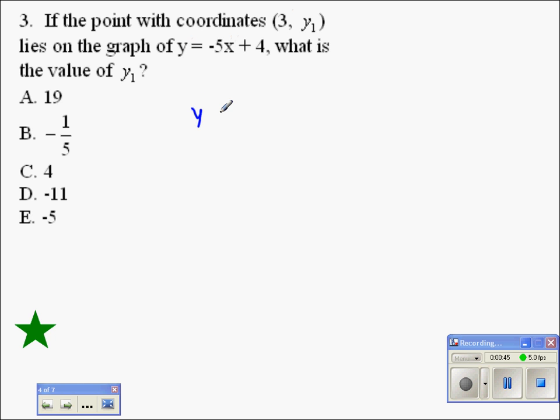Let's plug it in. y equals negative 5 times x, which is 3, given from the point above, plus 4.